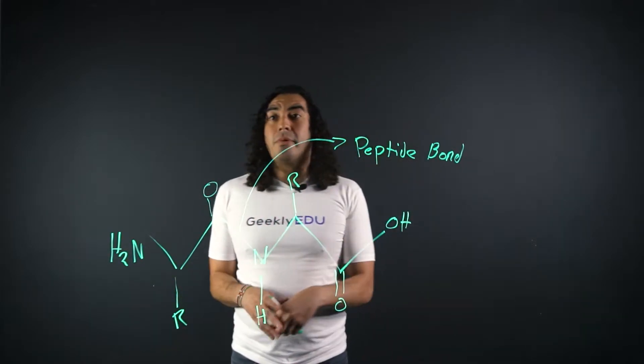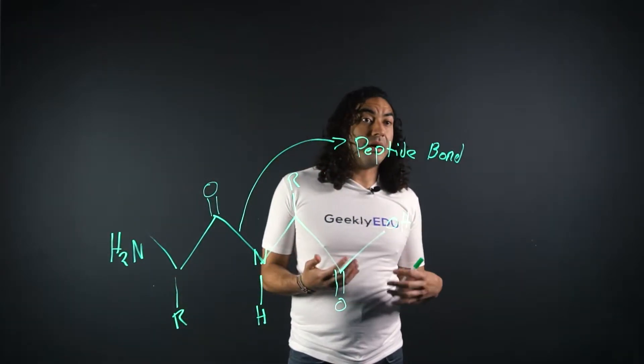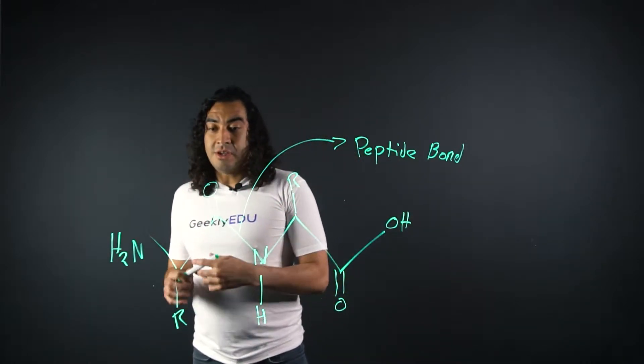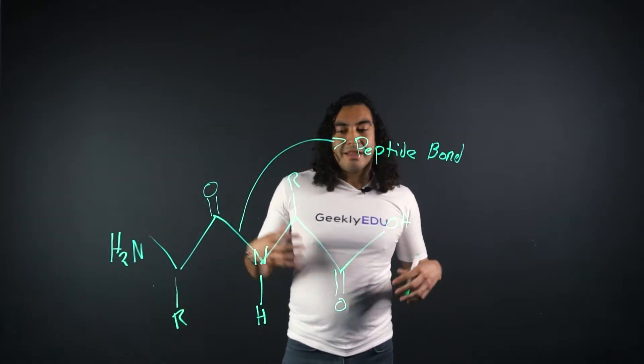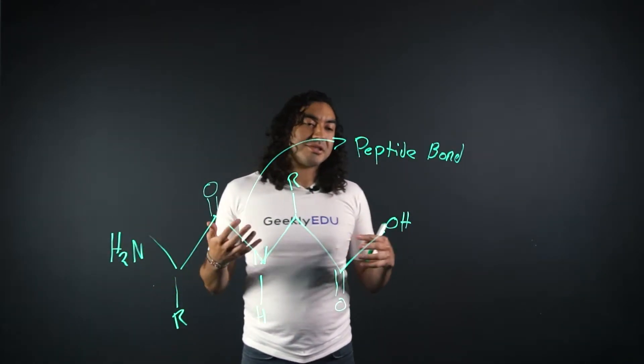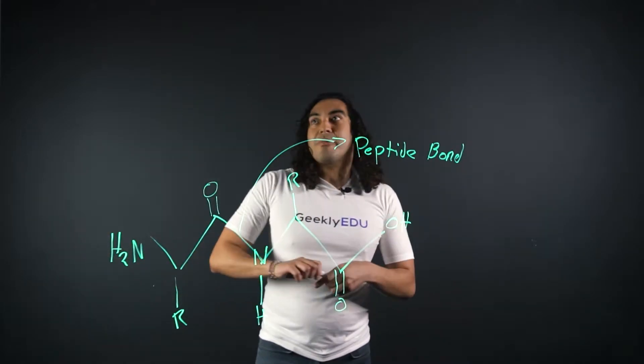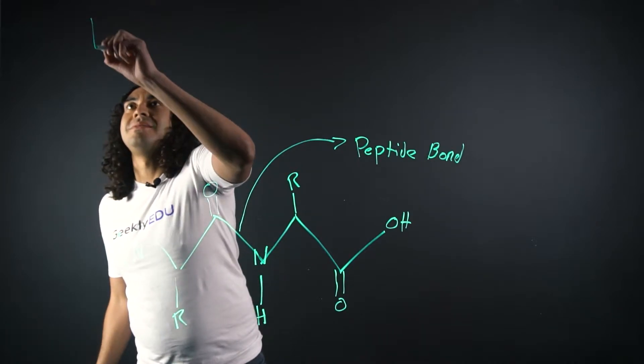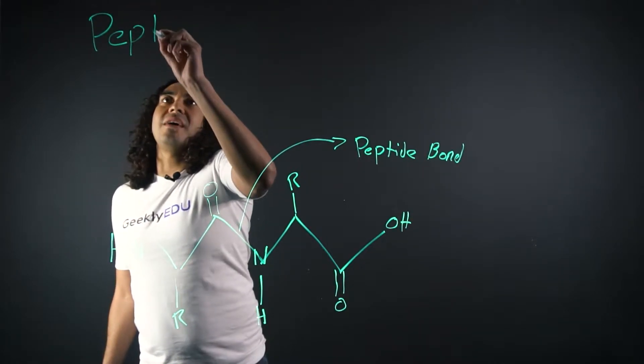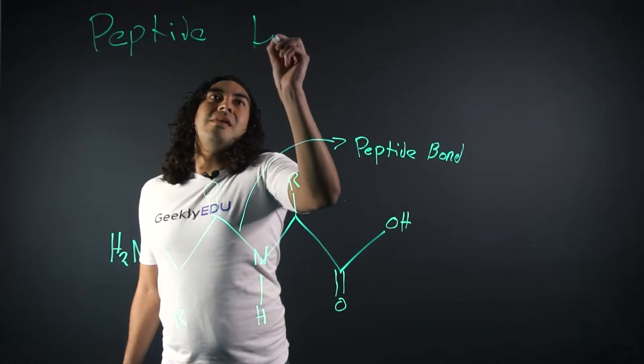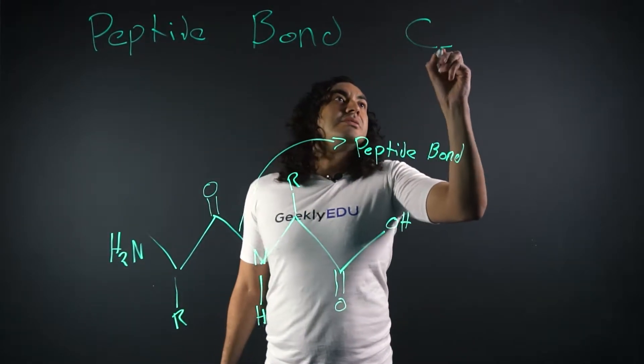Hey guys, so last video we went ahead and went over peptide bond formation. So when you form something, anytime you create something, there's always somebody that walks by, some bully that wants to destroy it. So that's why we're going to talk about peptide bond cleavage.